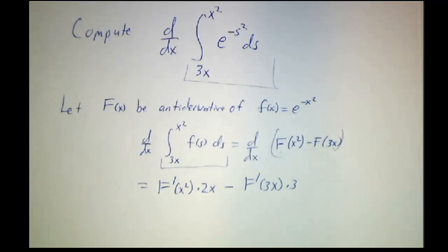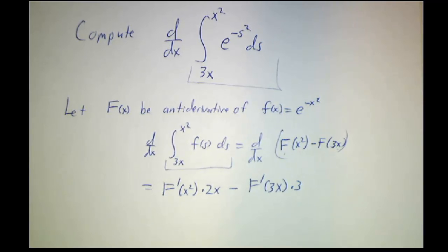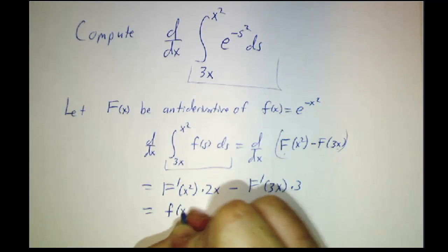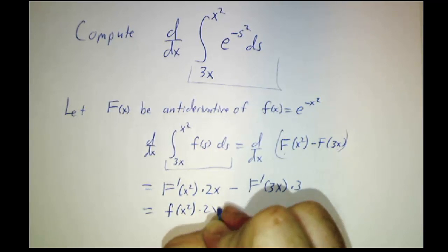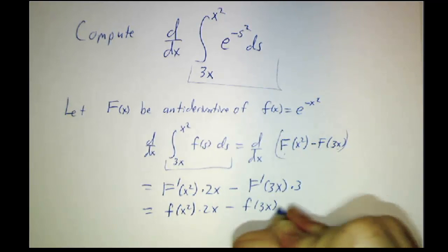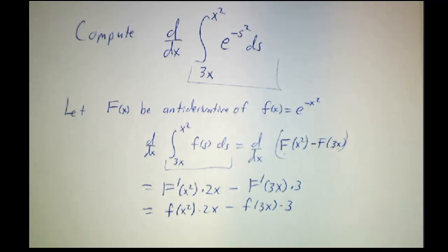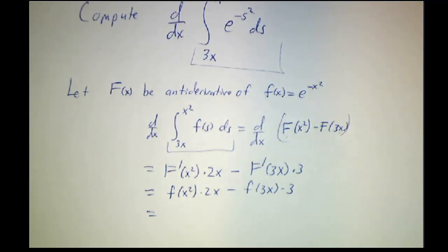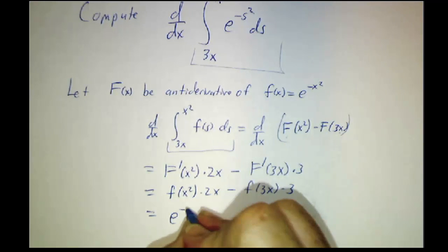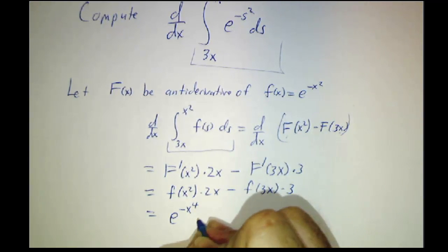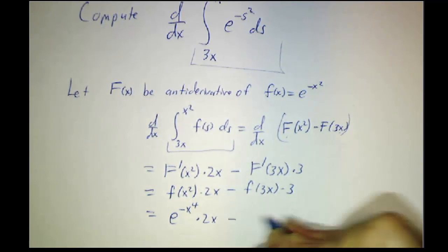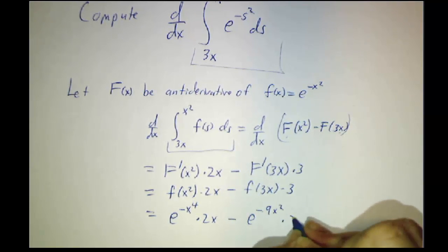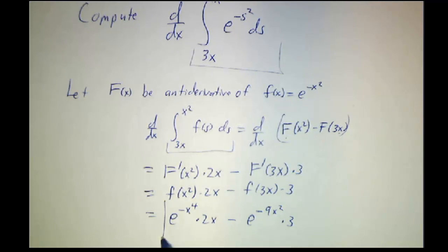And now here comes the magic. Big F is an antiderivative, so the derivative of big F is little f. So you just plug it in. And since f of x is e to the minus x-squared, this gives you e to the minus x to the fourth times 2x minus e to the minus 9x-squared times 3. And there's your answer.